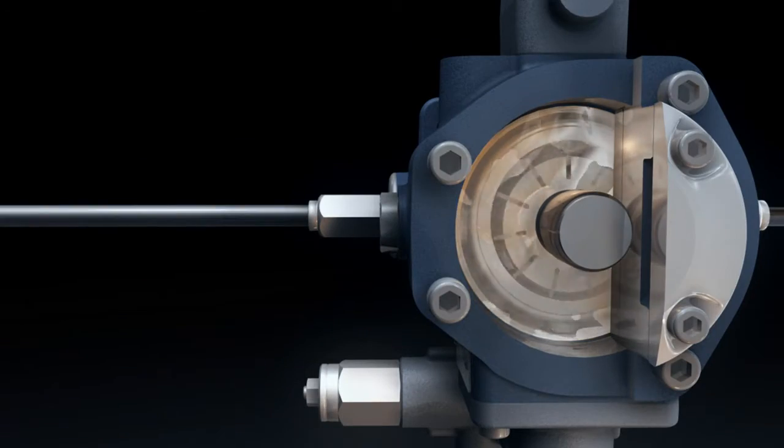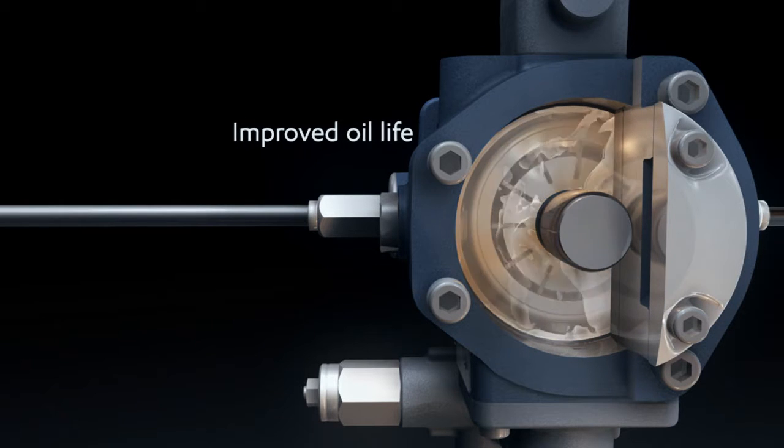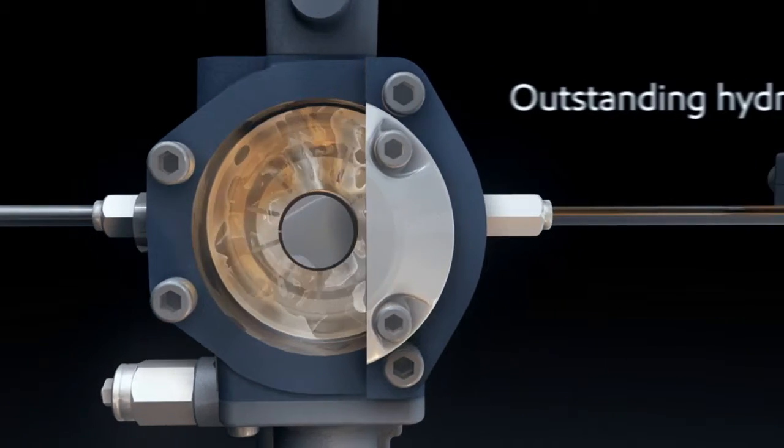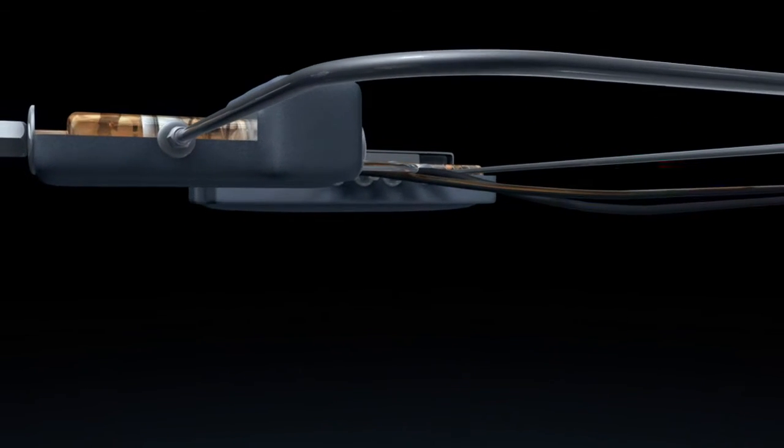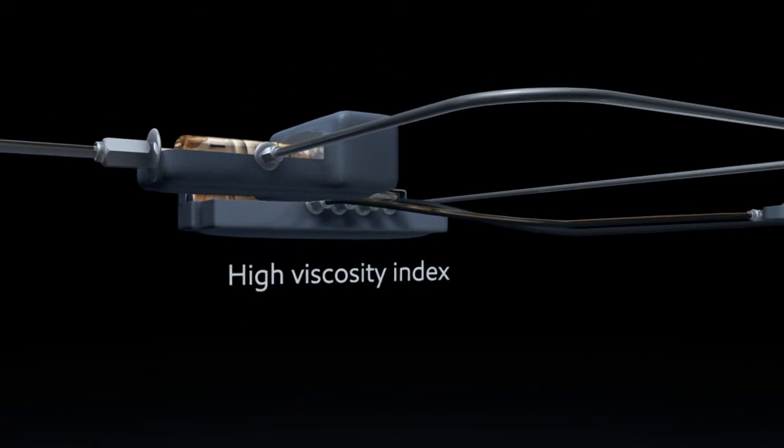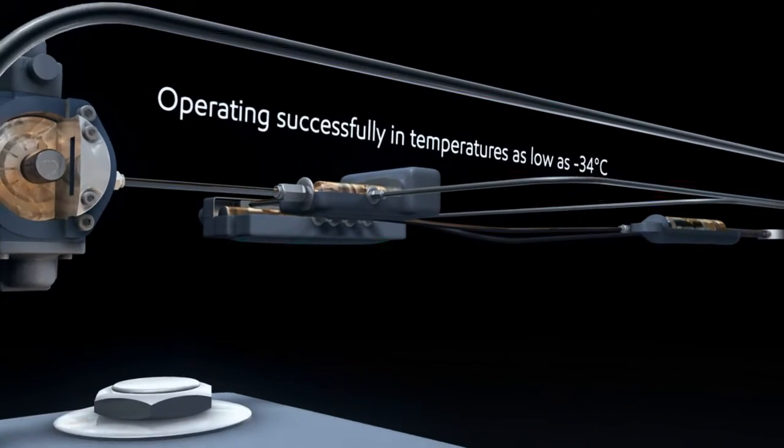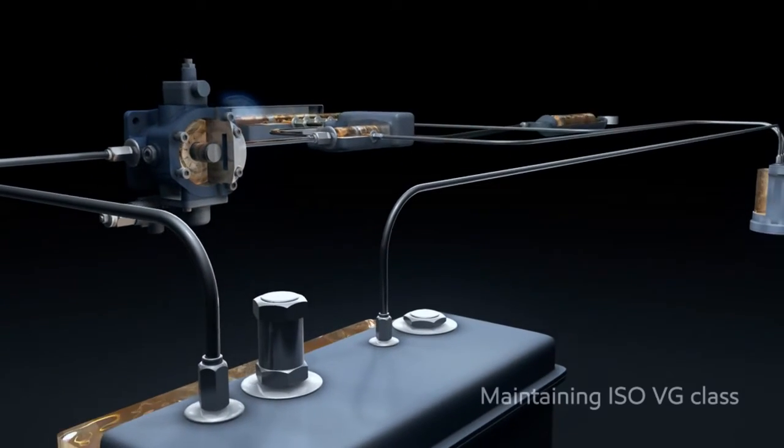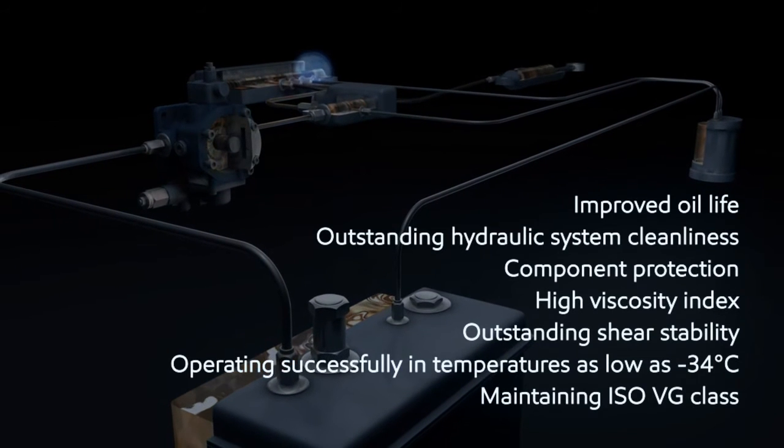Mobil DTE 10 Excel offers improved oil life compared to ExxonMobil's standard hydraulic oils, whilst maintaining outstanding hydraulic system cleanliness and component protection. It demonstrated the value of its high viscosity index and outstanding shear stability by operating successfully in temperatures as low as minus 34 degrees centigrade and by maintaining ISO VG class, setting it apart from ExxonMobil's standard hydraulic lubricants.